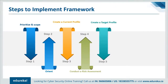Step five is to create a target profile. The organization creates a target profile that focuses on the assessment of framework categories and subcategories describing the organization's desired cybersecurity outcomes. Organizations may also develop their own additional categories and subcategories to account for unique organizational risks. The organization may also consider influences and requirements of external stakeholders such as sector entities, customers, and business partners when creating a target profile, which should appropriately reflect criteria within the target implementation tier.